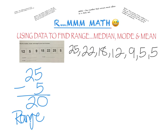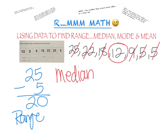Now let's find our median. Since we already put it in order from greatest to least, we were able to find the range and we'll be able to find the median right away. The median is the middle number in the data set when it's ordered. We had 1, 2, 3, 4, 5, 6, 7 — an odd number. The median equals 12. When you have an odd number in your data set, it's easy to find the median. When you have an even number, that's when you have to do two steps — I'll show you that in a moment.